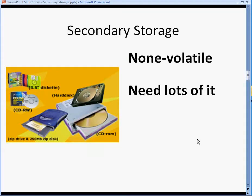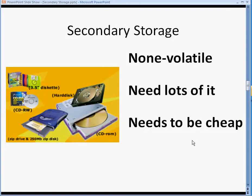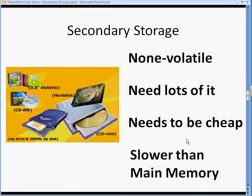Because we might store lots of pictures, music, and video these days on our secondary storage, we therefore need lots of it. And because we need lots of it, it needs to be cheap — but because it needs to be cheap, it is therefore slower than main memory.